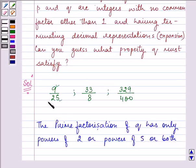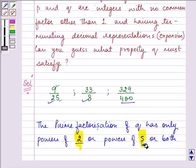As we can see, 25 has the prime factorization of q as the power of 5 only, whereas 8 has only 2. But 400 has both the powers of 2 as well as 5. So this condition must be satisfied in order to have a terminating decimal representation.